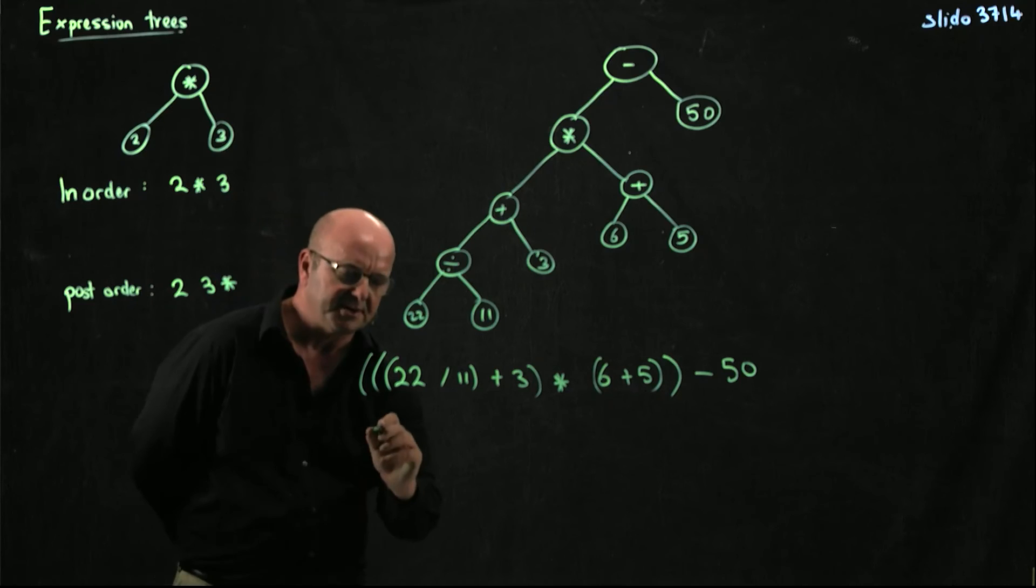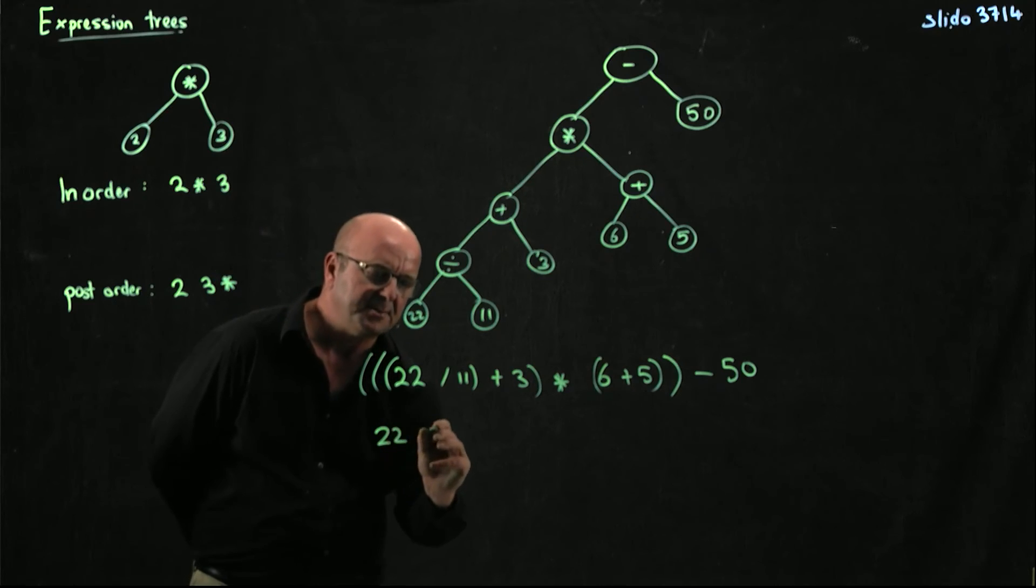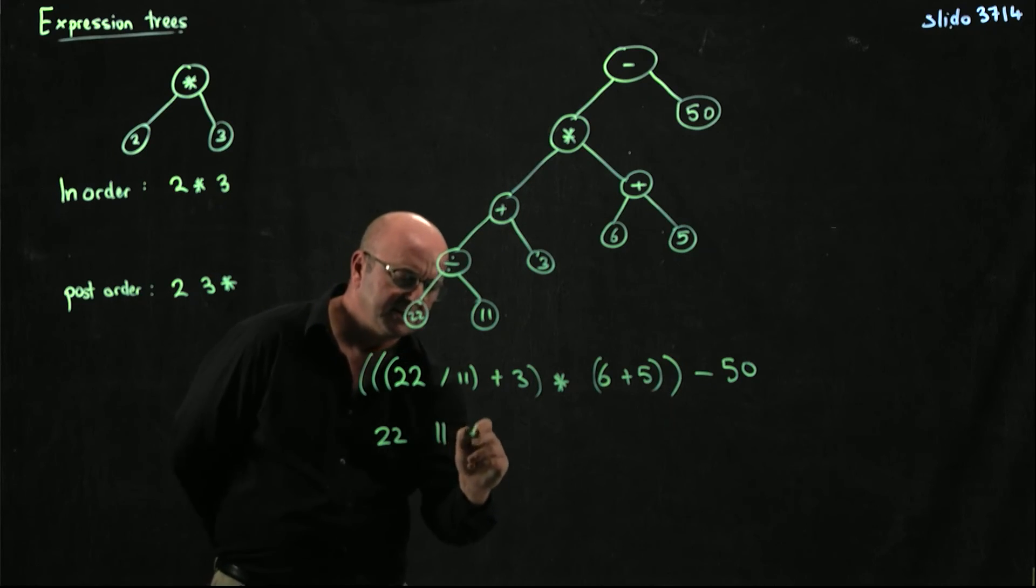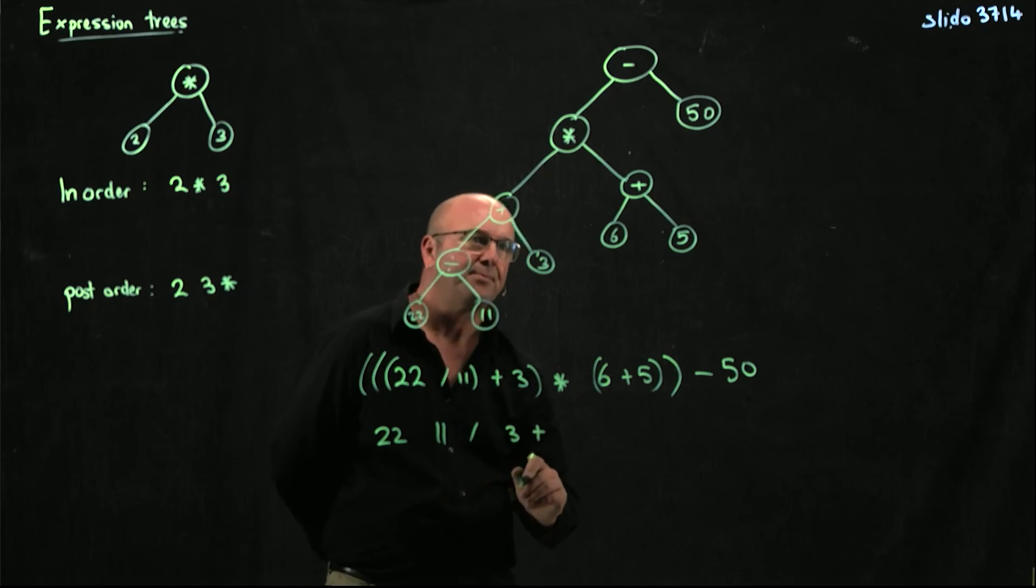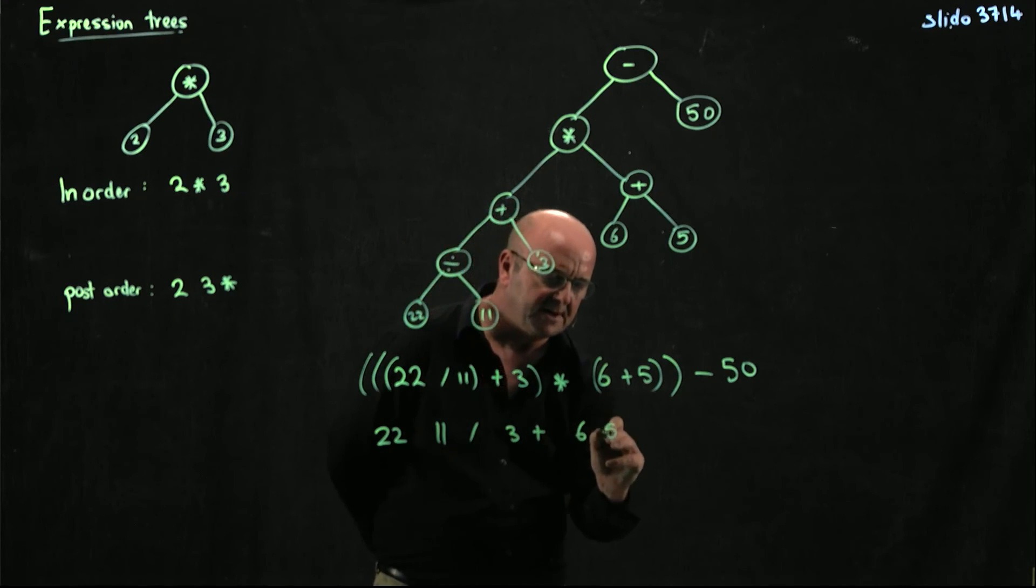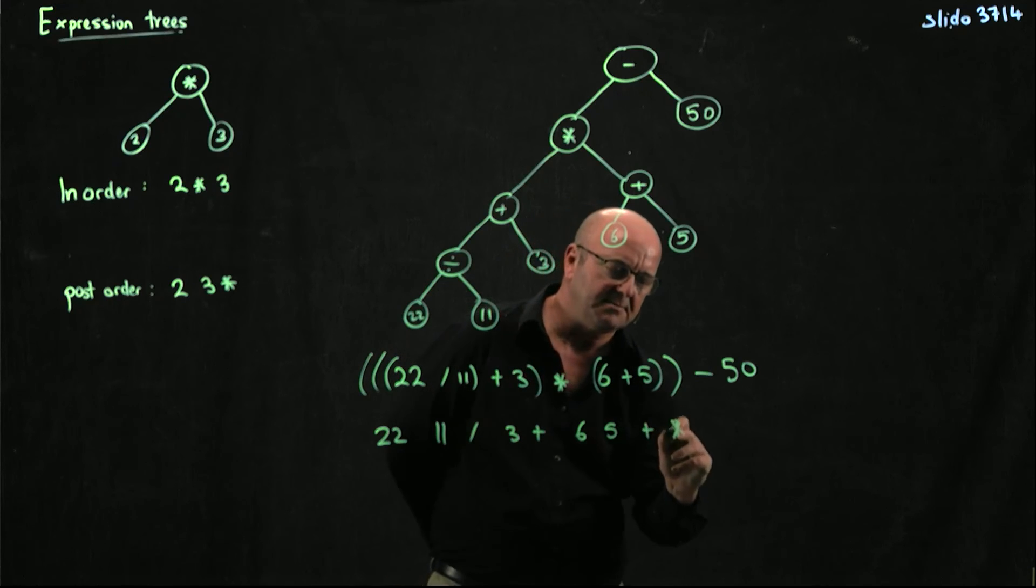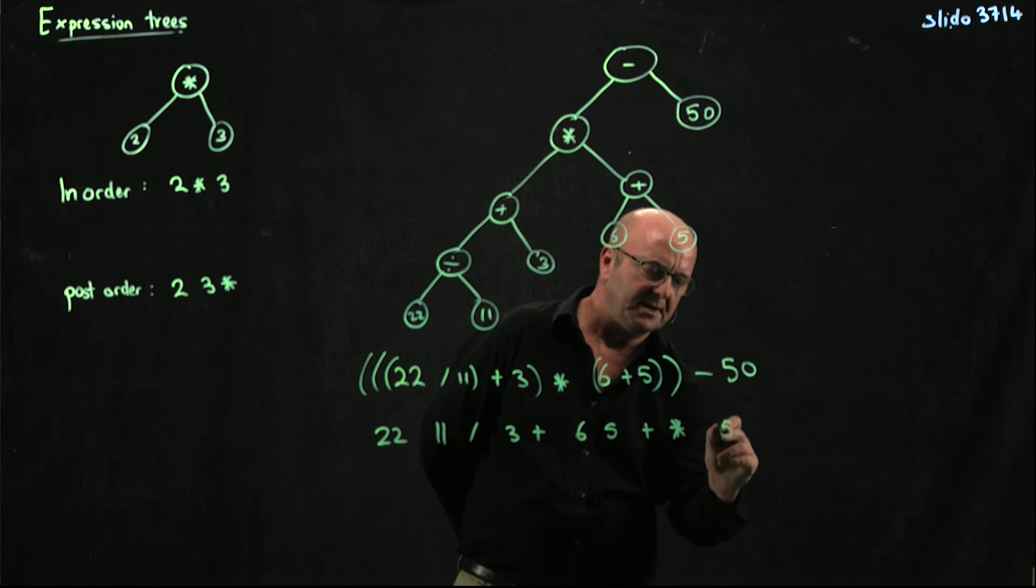I can do a post-order traversal of the tree, in which case it would be 22, 11 divide, 3 plus, 6, 5 plus times, 50 minus.